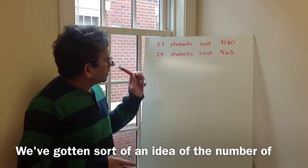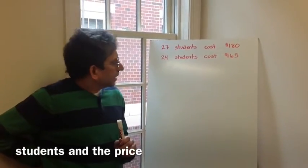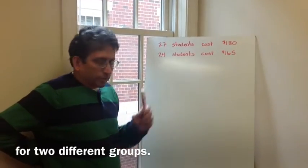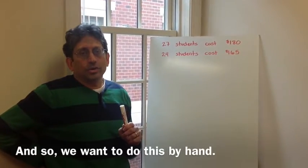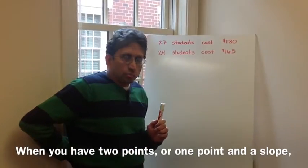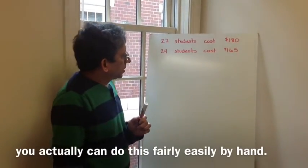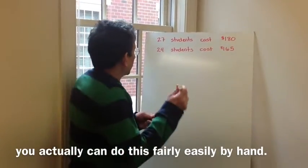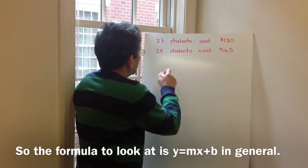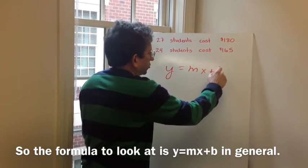We've gotten an idea of the number of students and the price for two different groups. We want to do this by hand. When you have two points or one point and a slope, you can do this fairly easily by hand. So the formula to look at is y equals mx plus b in general.